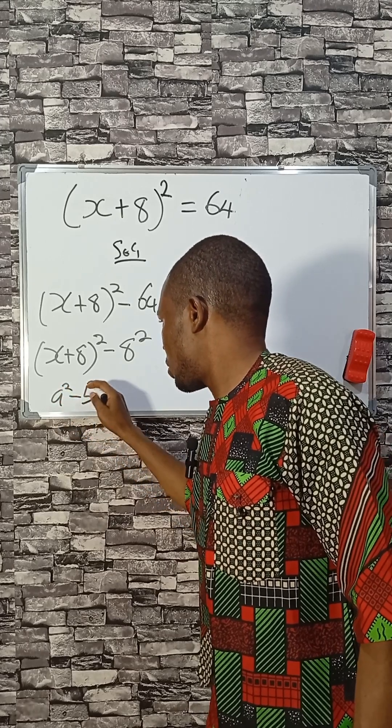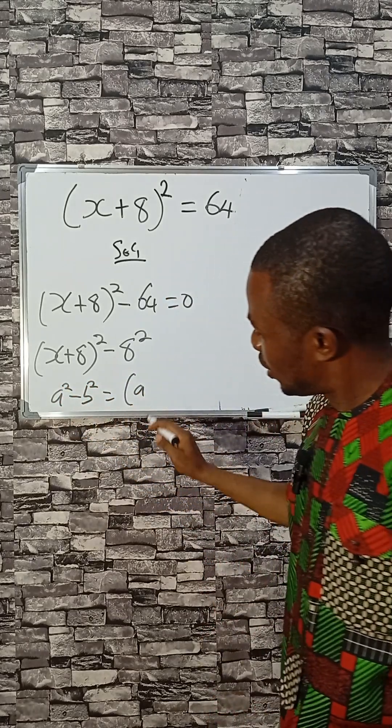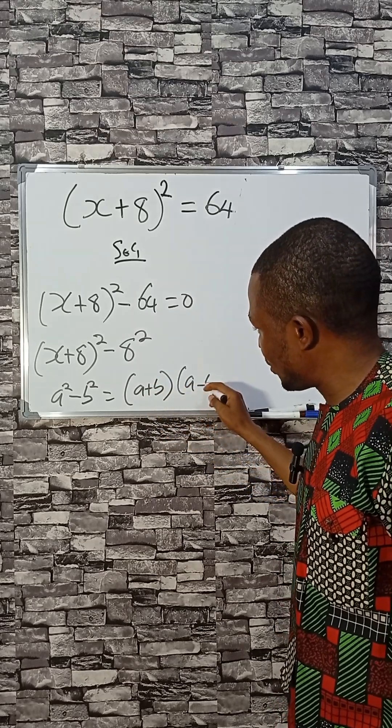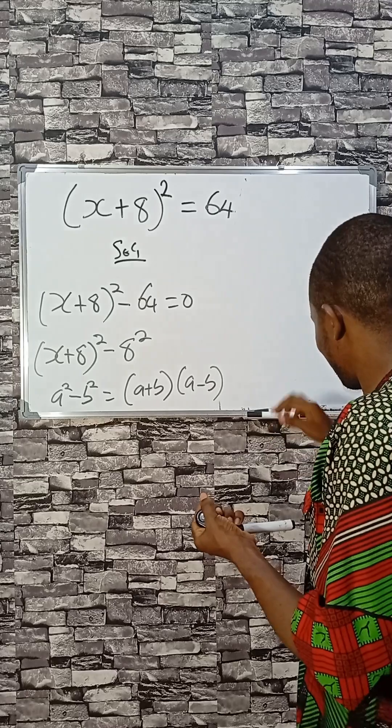X² minus B² equals (A+B) times (A-B). That is what difference of two squares says.